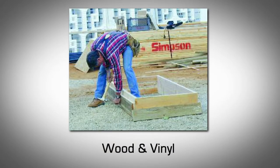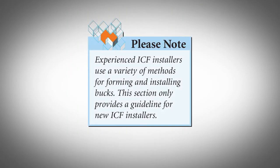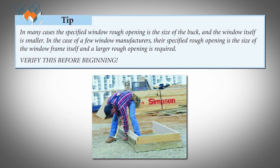The two most common materials used for bucks are wood and vinyl. Some contractors build their own bucks using 2x lumber, while others prefer using a vinyl buck. Experienced ICF installers use a variety of methods for forming and installing bucks; this section only provides a guideline for new ICF installers. In many cases, the specified window rough opening is the size of the buck and the window itself is smaller. In the case of a few window manufacturers, their specified rough opening is the size of the window frame itself and a larger rough opening is required. Verify this before beginning.